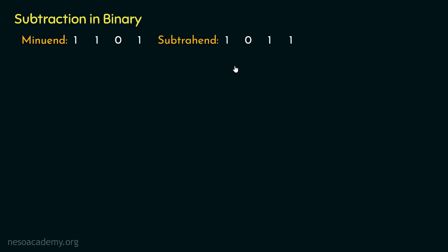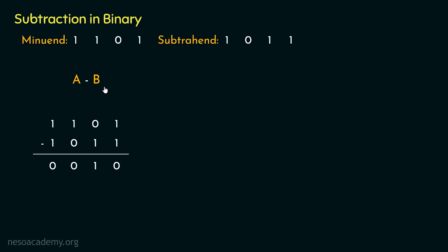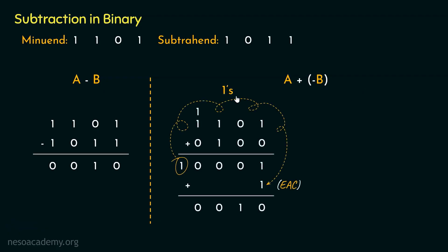Let's now see all the subtraction methods side by side. When performing A minus B with pen and paper, we do proper subtraction. In the machine's way, we perform A plus (negative inverse of B). In one's complement technique, we add the minuend with the one's complement of the subtrahend. If we get a carry, it signifies the result is positive — the minuend is greater than the subtrahend — and we end-around the carry to add it with the rest of the bits.